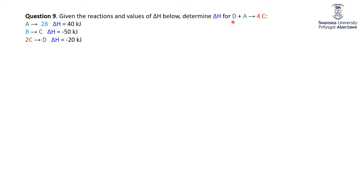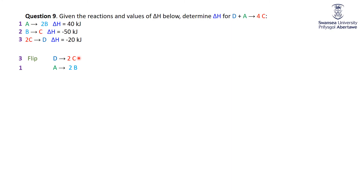I want a D on the left-hand side. The only equation with a D has it on the right-hand side — that's equation 3 — so I'll flip it, giving D → 2C. I also want an A on the left, and equation 1 already has A on the left, so I use it as is. Adding these two gives D + A on the left, but on the right I get 2C plus an unwanted 2B.